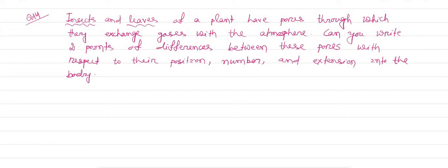Insects and leaves of a plant have pores through which they exchange gas with the atmosphere. Can you write two points of differences between these pores? That means the pore present in insects and the pore present in leaves — we have to write two points with respect to their position, the number present in each, and extension into the body.